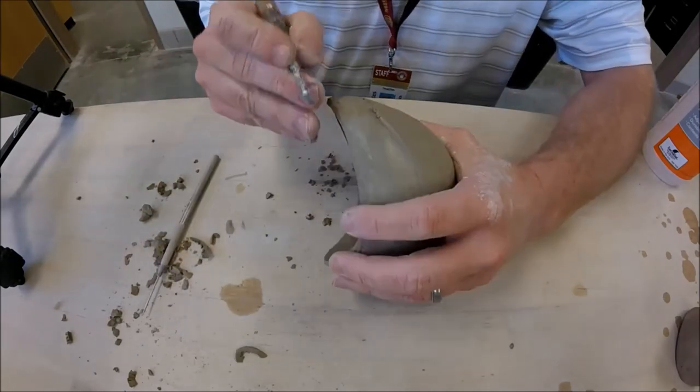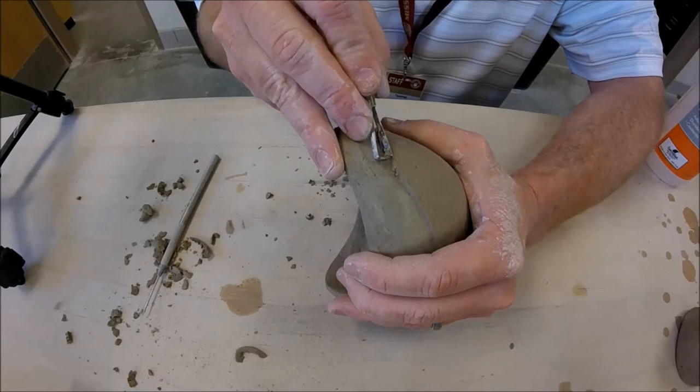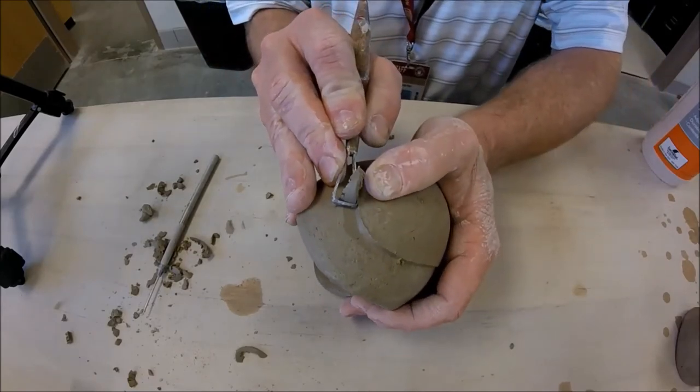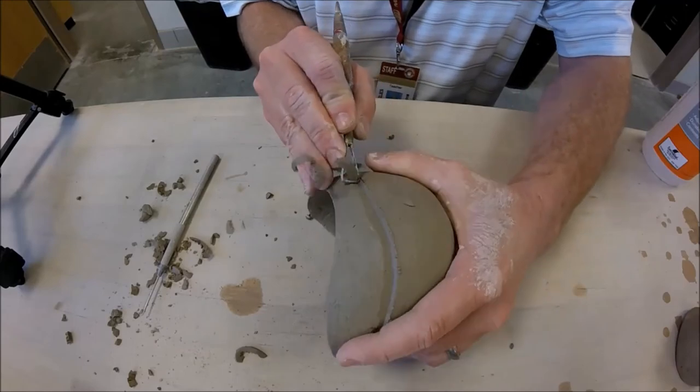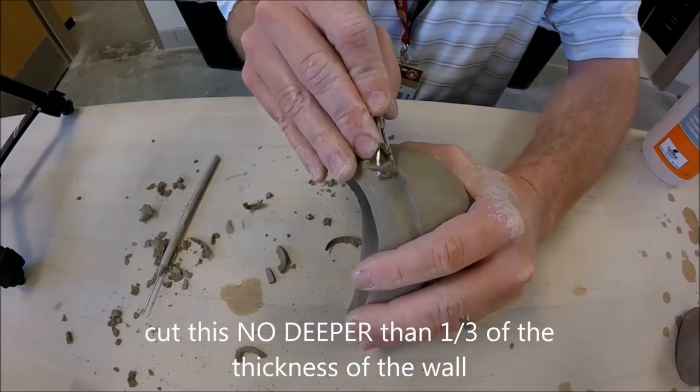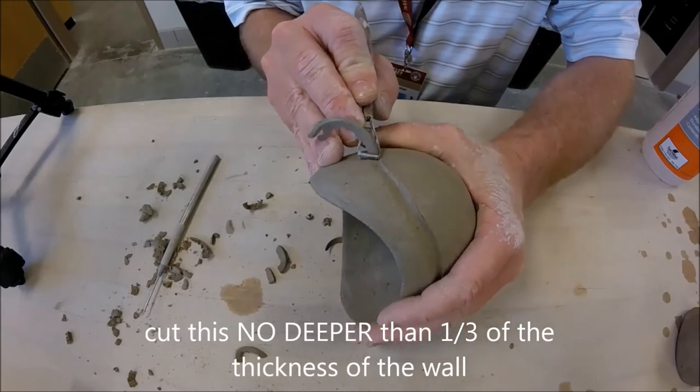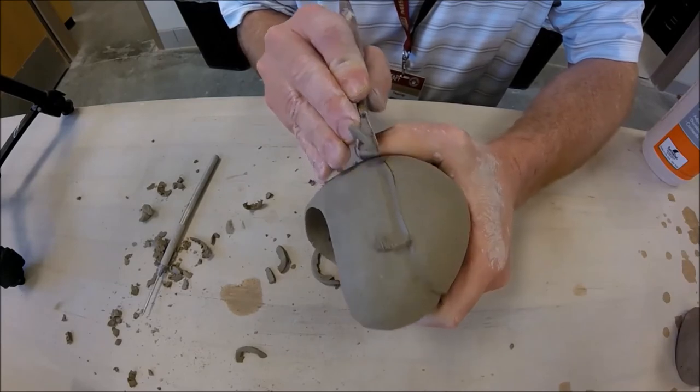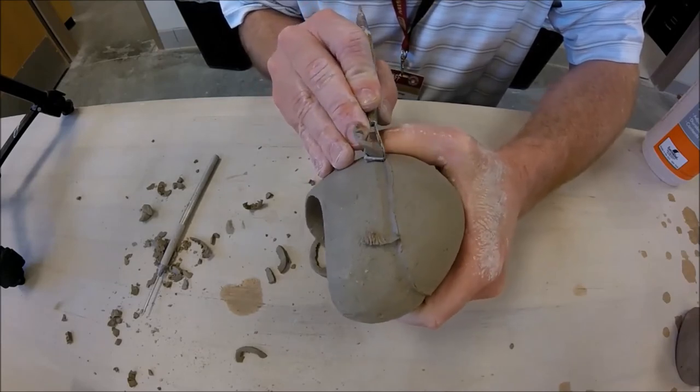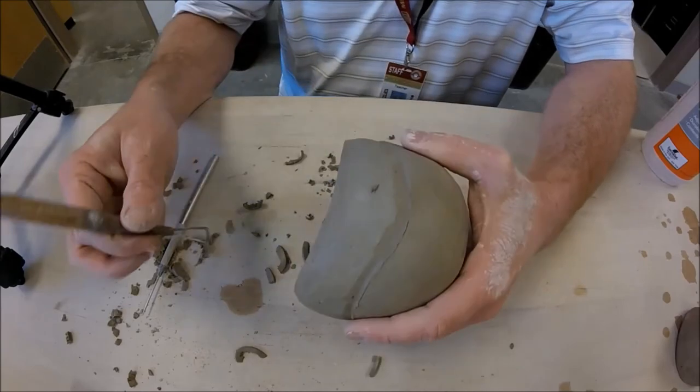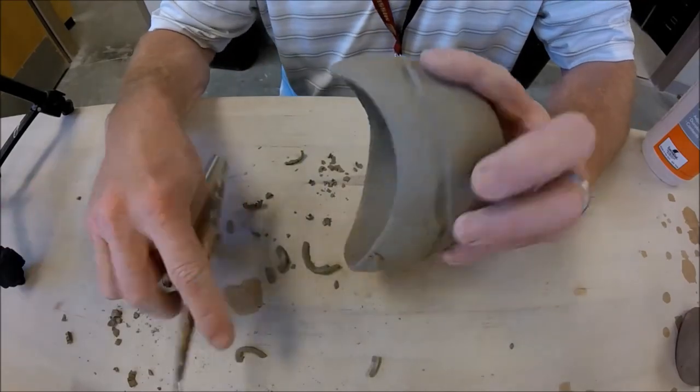I'm going to follow that line all the way across, first cutting the cliff in. Be careful, don't go too deep. Do not cut deeper than one third into the wall. However thick your wall is, you can dig a third of the way into it. Otherwise we're going to run into even thickness problems. Okay, so I made my first cut.